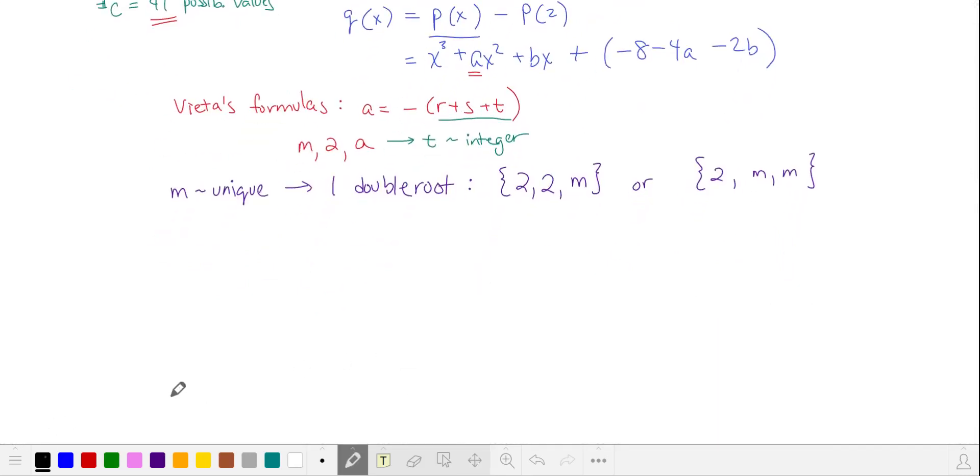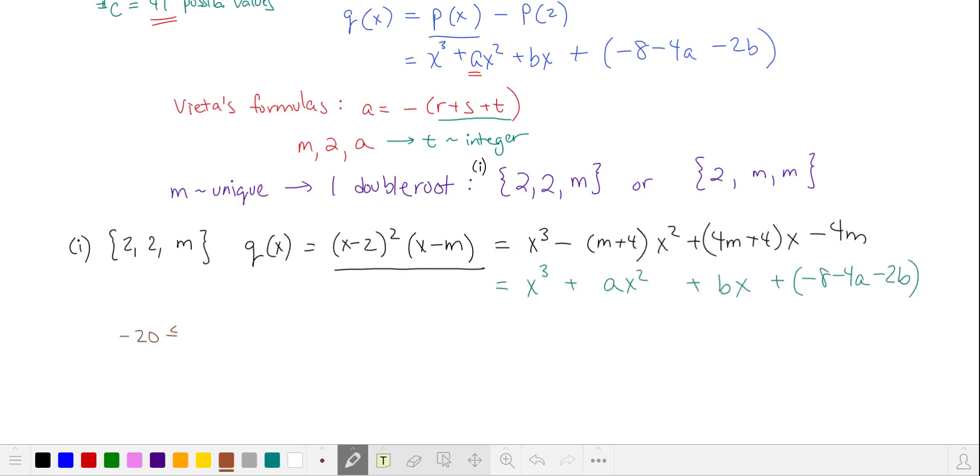We'll take a look at these cases in turn. Our first case has roots 2, 2, and m, so our polynomial looks like this. We'll multiply it out and match it up with our coefficients. From the problem, we have that b is an integer between negative 20 and 20 inclusive, so we'll substitute for our coefficient of X. Subtracting 4 and dividing by 4, we get that m is an integer between negative 6 and 4.